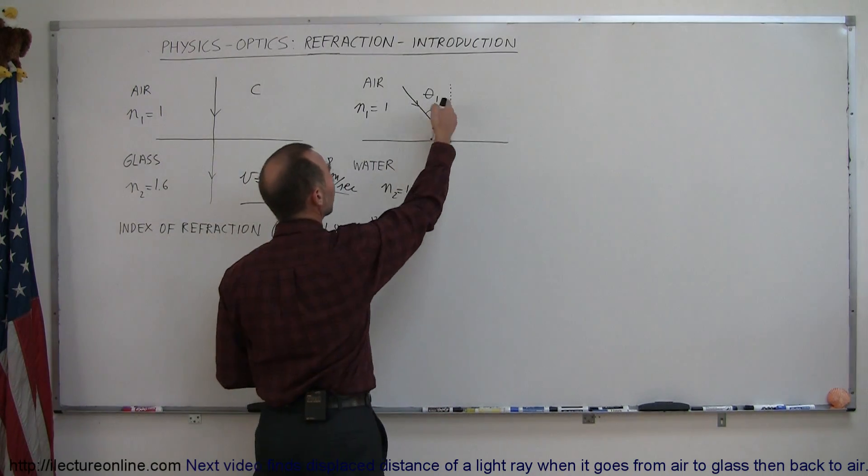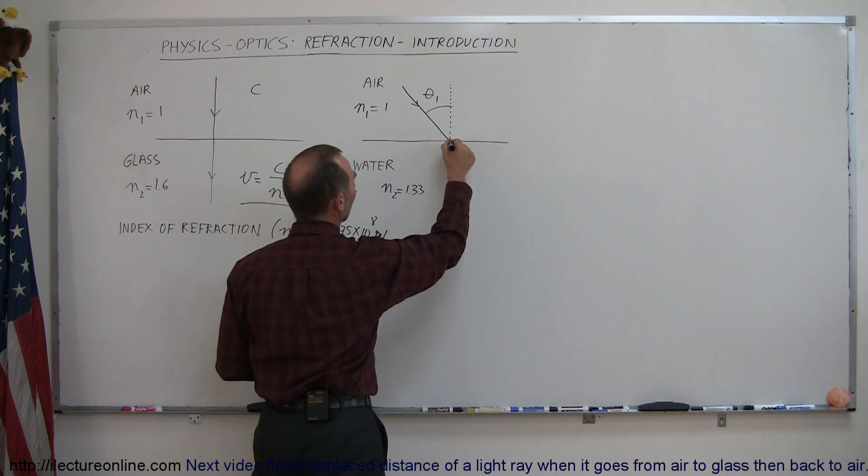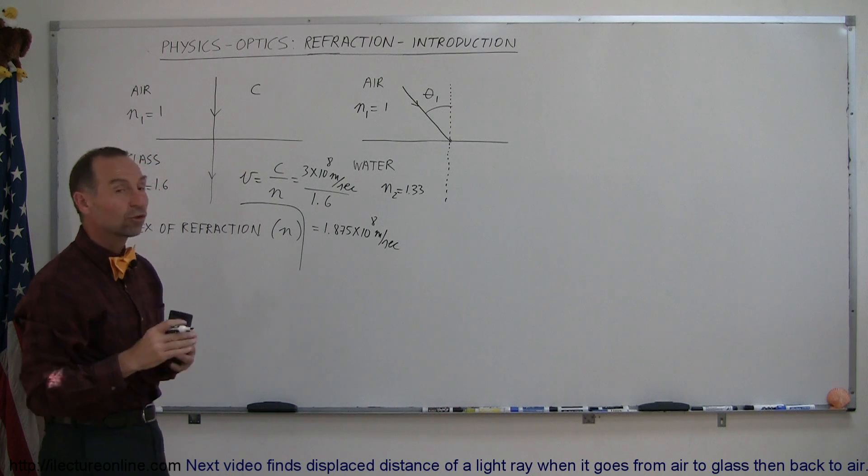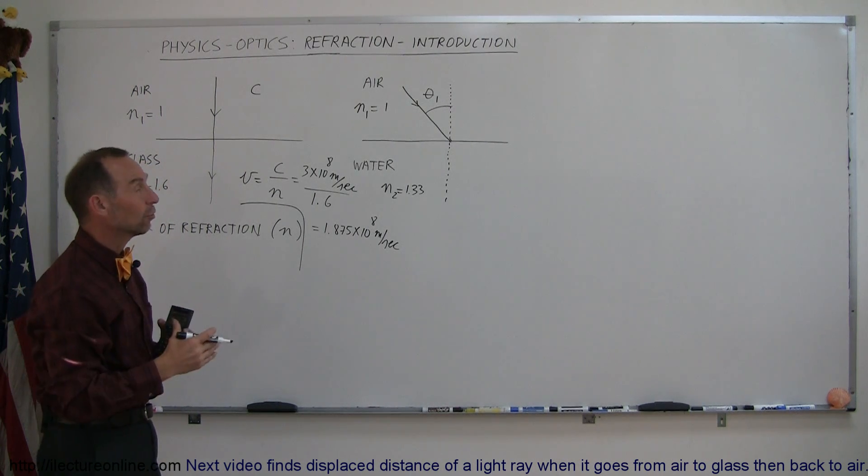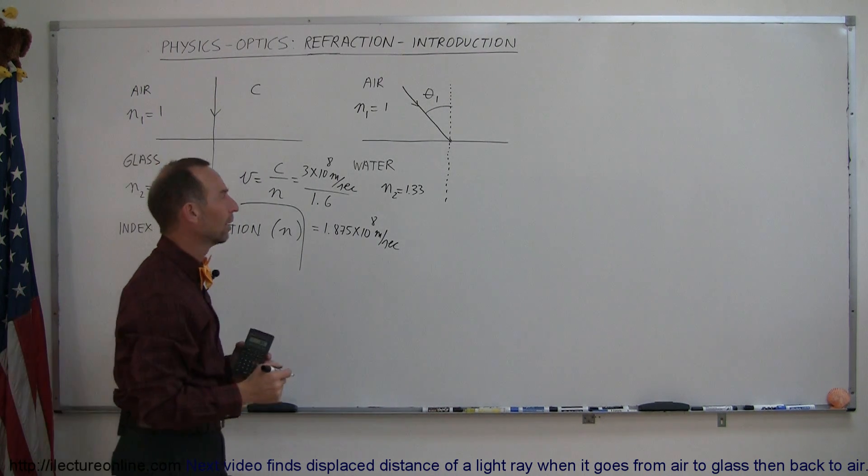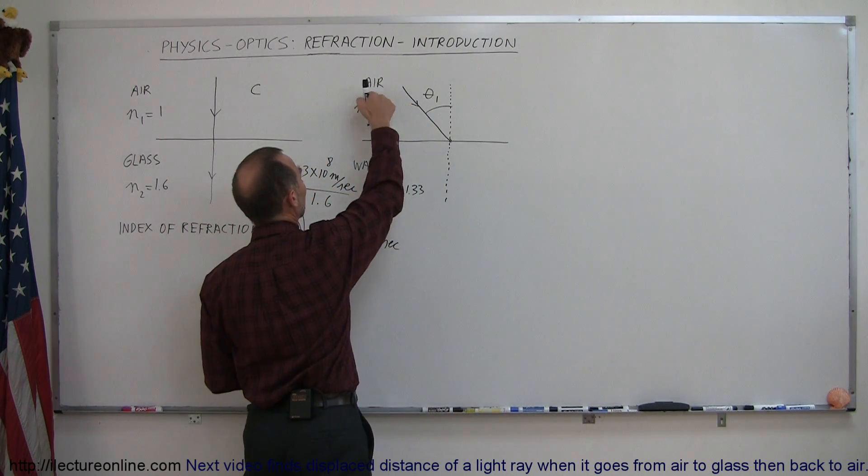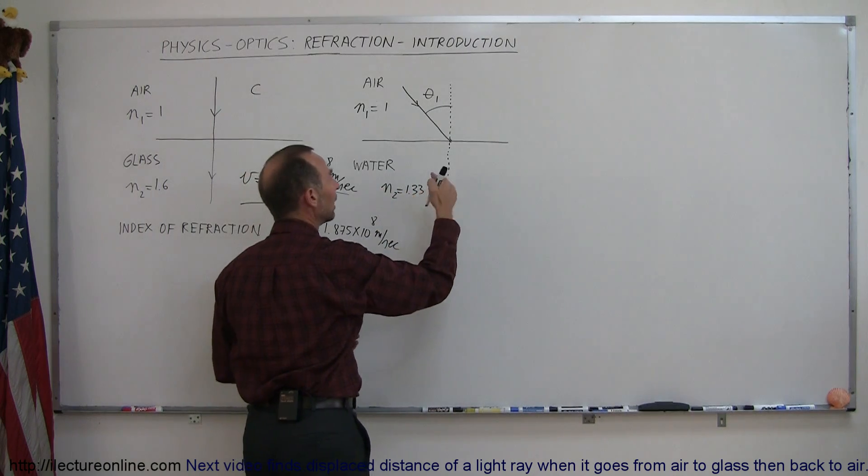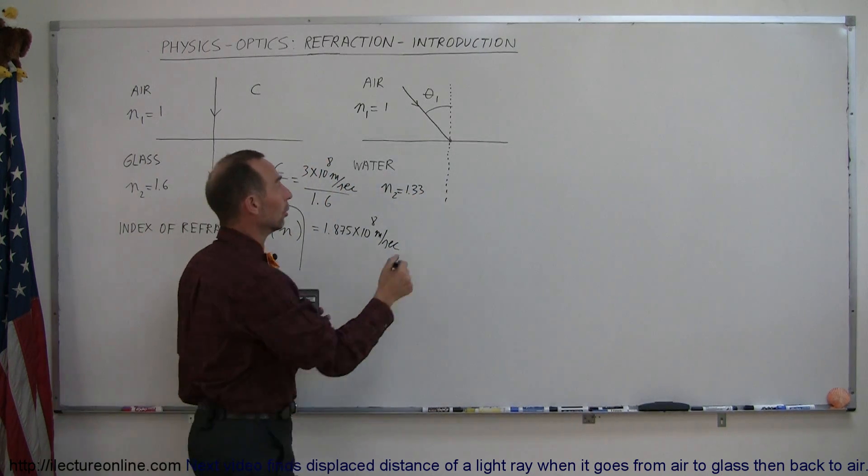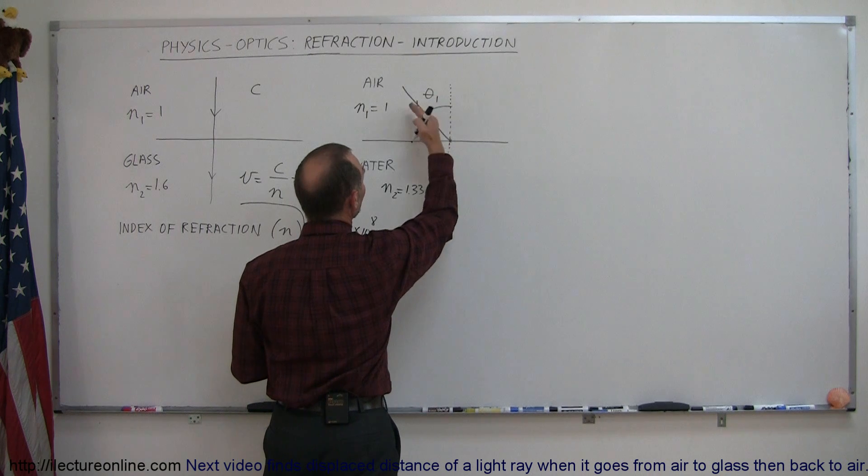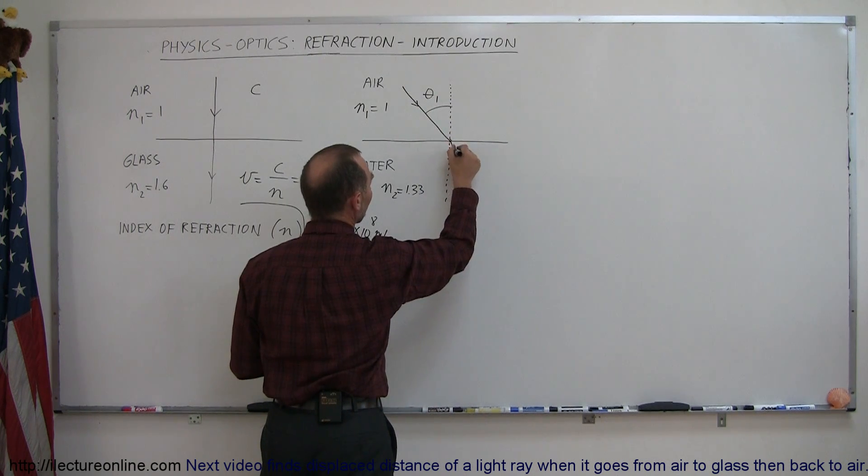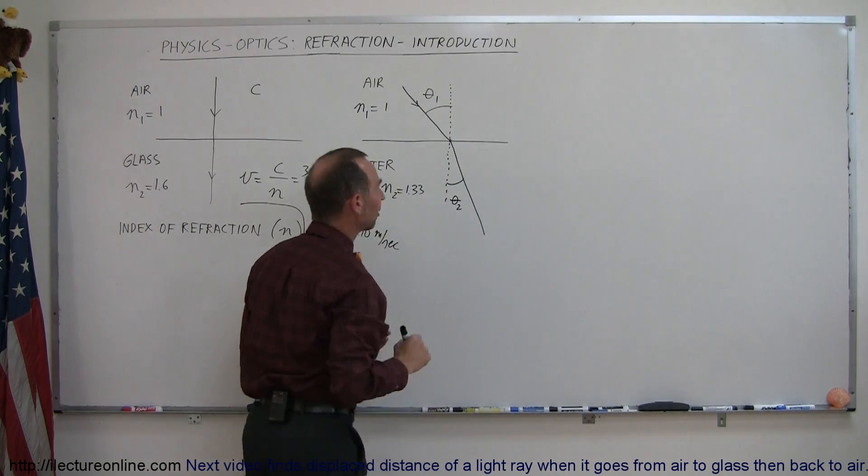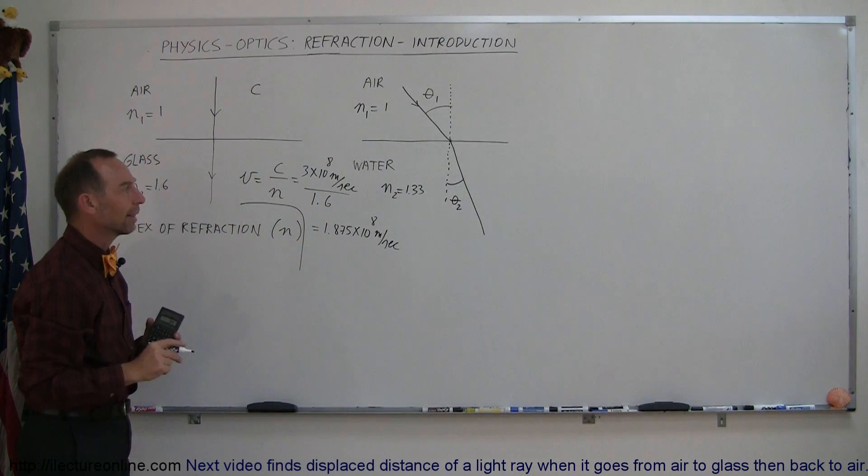It travels at an angle relative to the normal, and when it crosses a boundary like that, something else happens to the light besides it slowing down. It also changes direction. It bends, or it refracts as we call it. In the case of light that travels from an index of refraction which is smaller to an index of refraction which is larger, the bending will be what we call towards the normal. The angle between the normal and the ray will become smaller. This now will be theta sub 2. Notice that theta sub 2 is indeed smaller than theta sub 1.